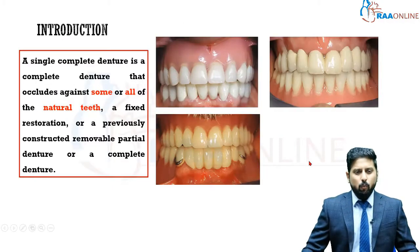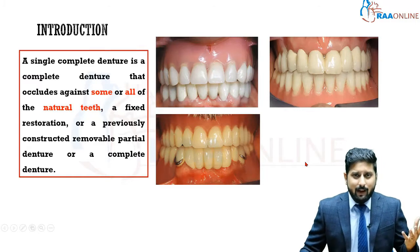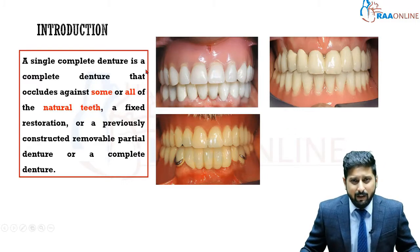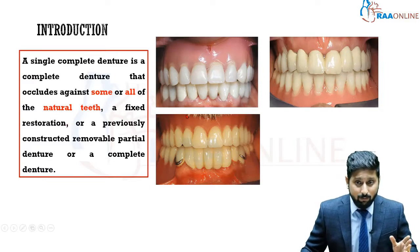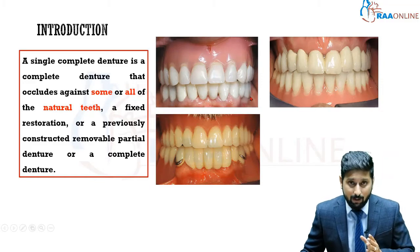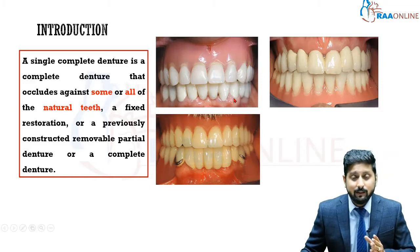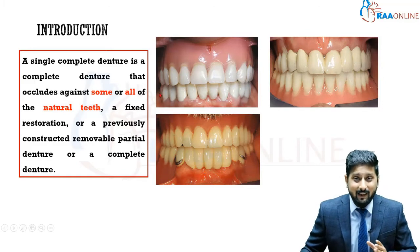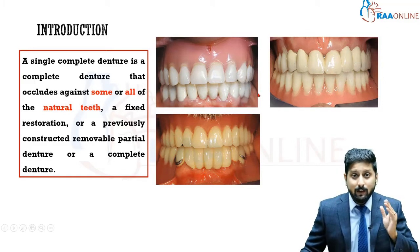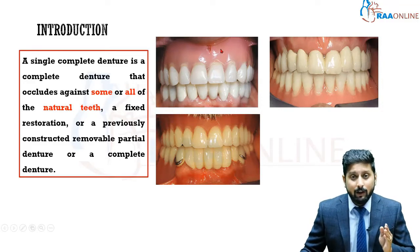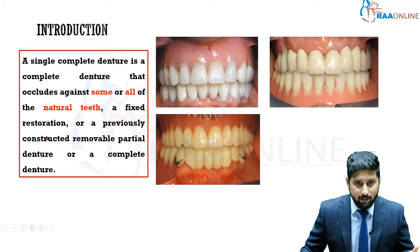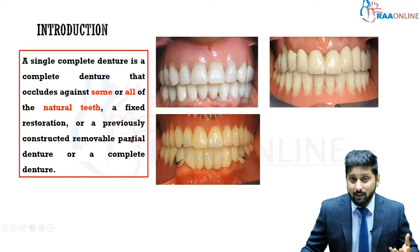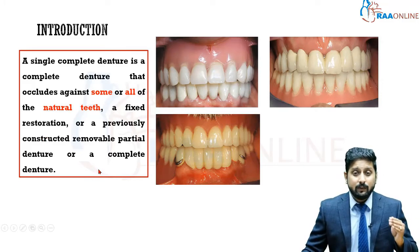So what do you mean by a single complete denture? A single complete denture is a complete denture that occludes against some or all of the natural teeth. You can have a completely dentureless arch with the opposing arch either being a single complete denture in the maxilla opposing a completely dentureless mandible with a full complement of natural teeth, or a mandibular lower denture against natural teeth, or against a fixed restoration, previously constructed removable partial denture, or even a previous complete denture.